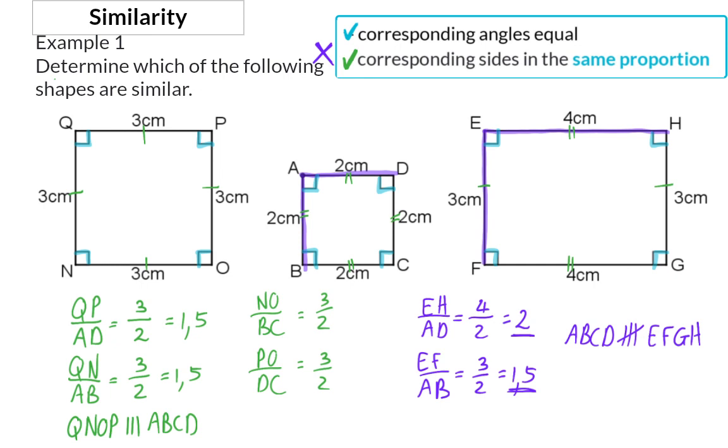So here we saw that the two similar shapes were both squares, but the rectangle is not similar to either of the two squares.